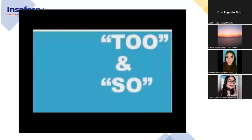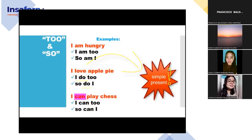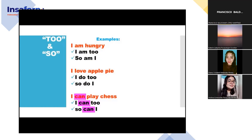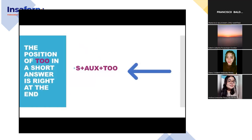To agree with something being said in English, we can use 'too' or 'so' in short answers. Notice we use the auxiliary verb of the statement being said to us. For example: 'I am hungry' — 'I am too' or 'so am I.' 'I love apple pie' — 'I do too' or 'so do I.' 'I can play chess' — 'I can too' or 'so can I.' The position of 'too' is right at the end.